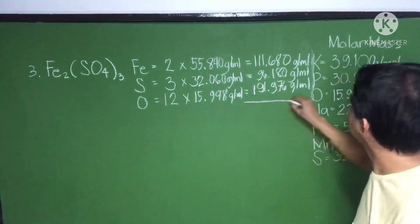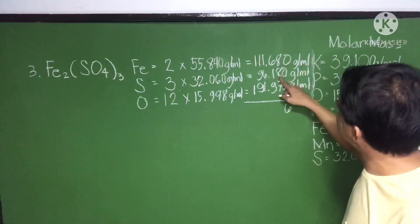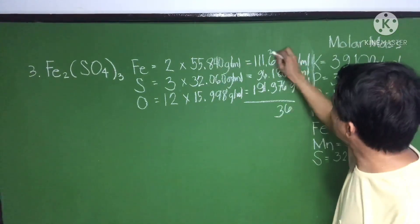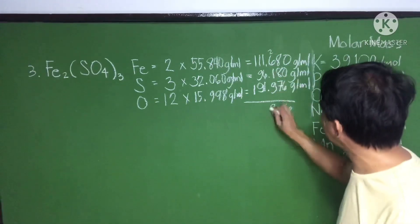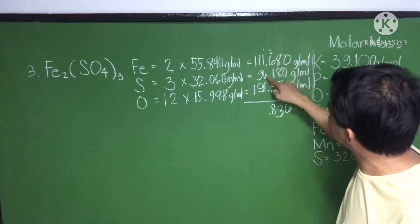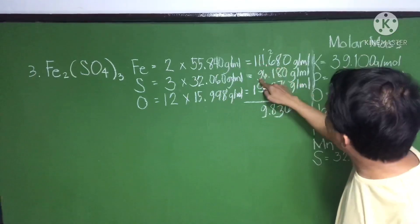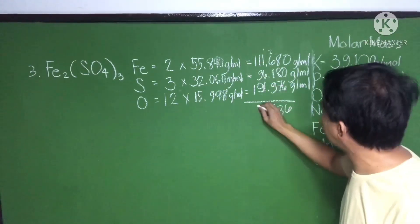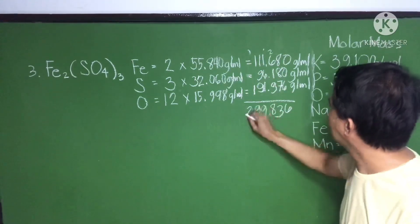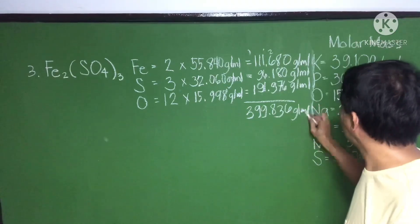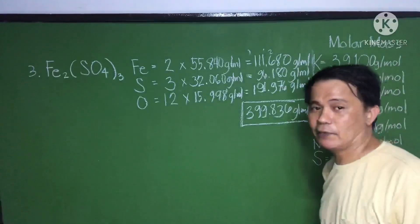So just add it all up: 111.680 plus 96.180 plus 191.976. That would be the molar mass of the third compound, in grams per mole.